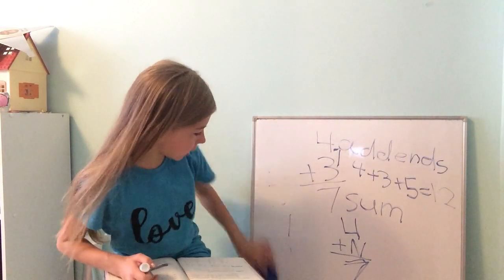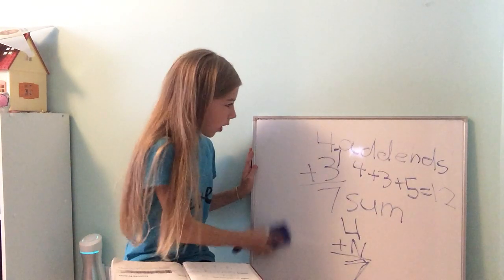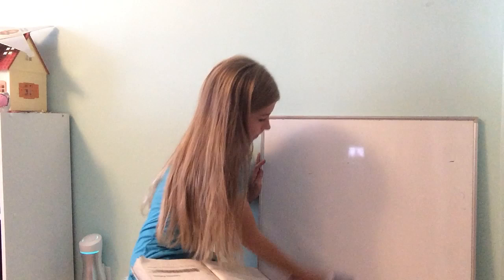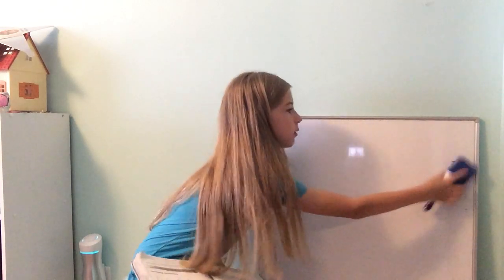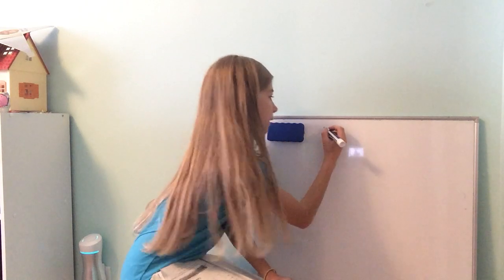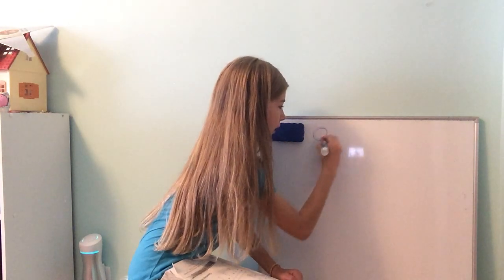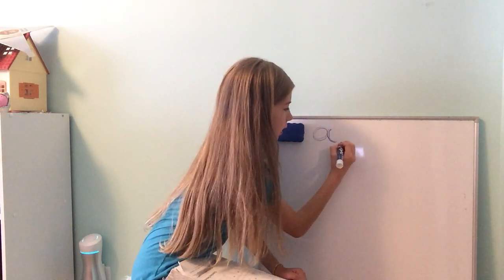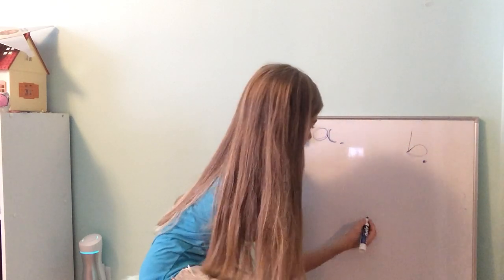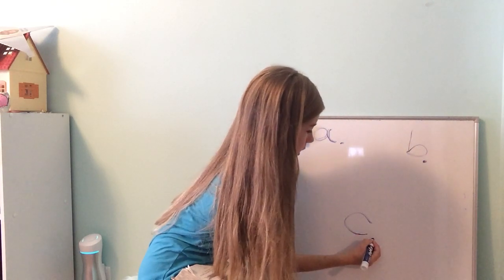Now that you know how to do n, let's move on to the practice set. Okay. This says add or find the missing addend. So for practice sets, it goes by letters. So A is the first problem. B is the second problem. And C is the third problem.